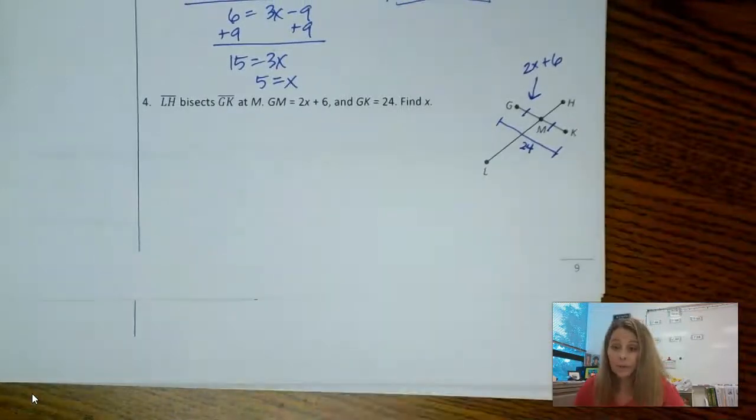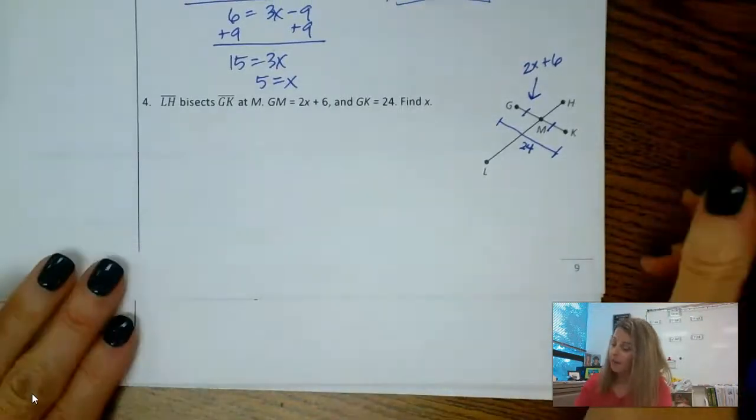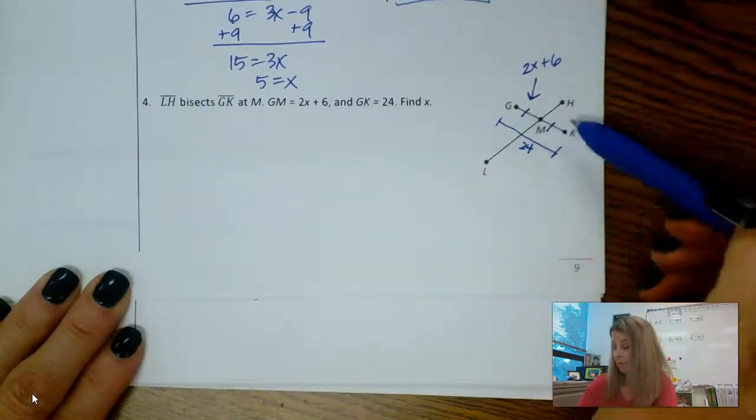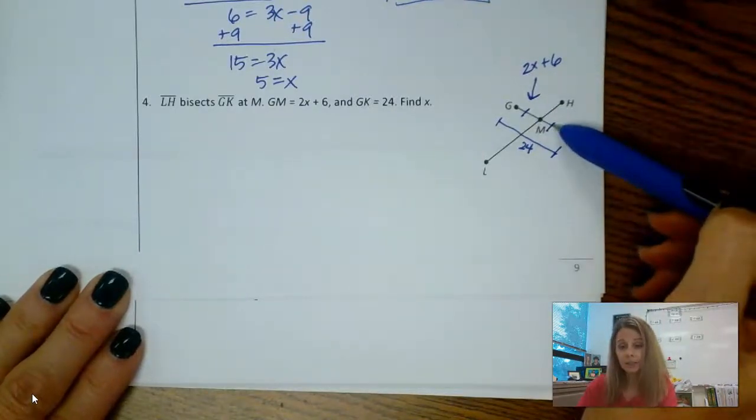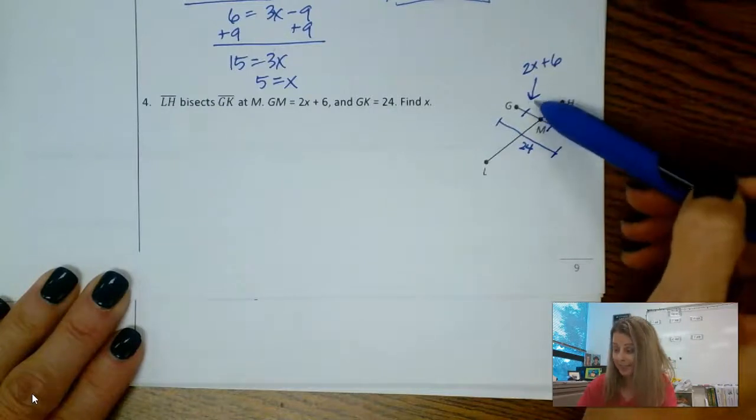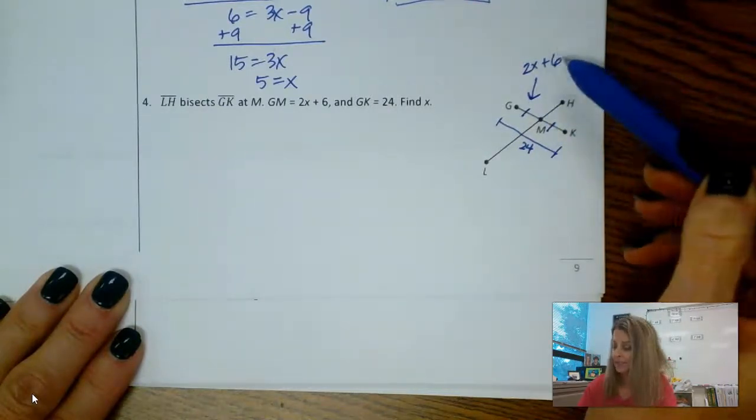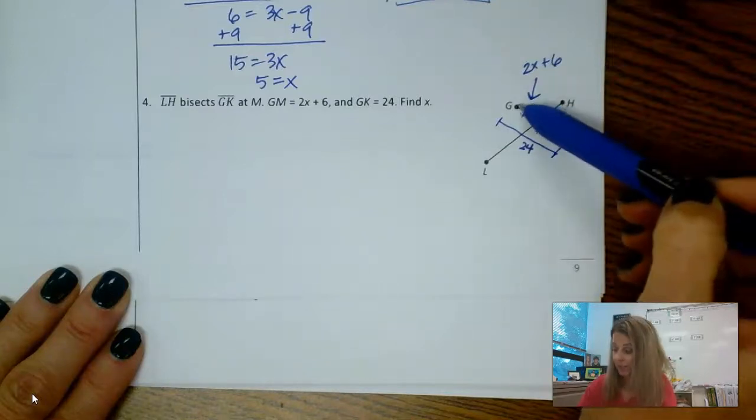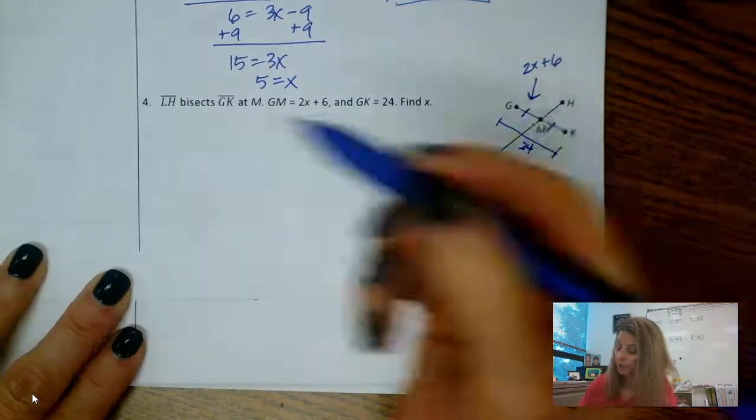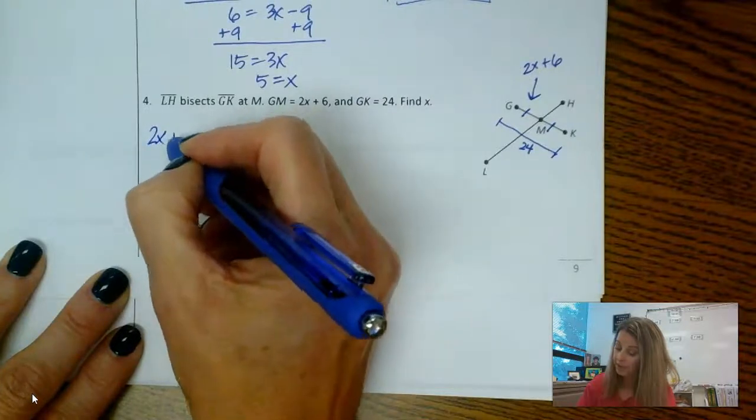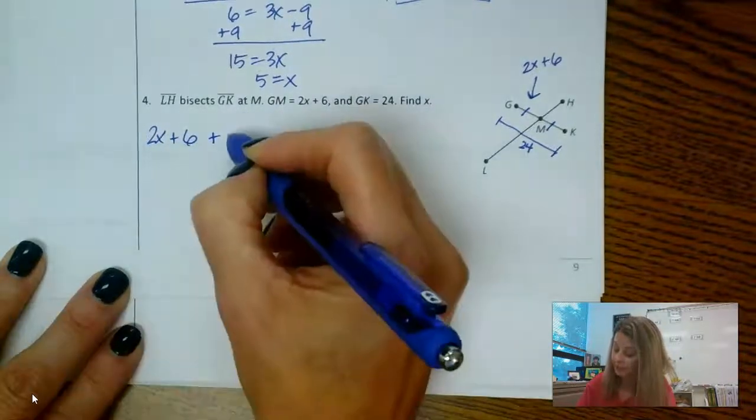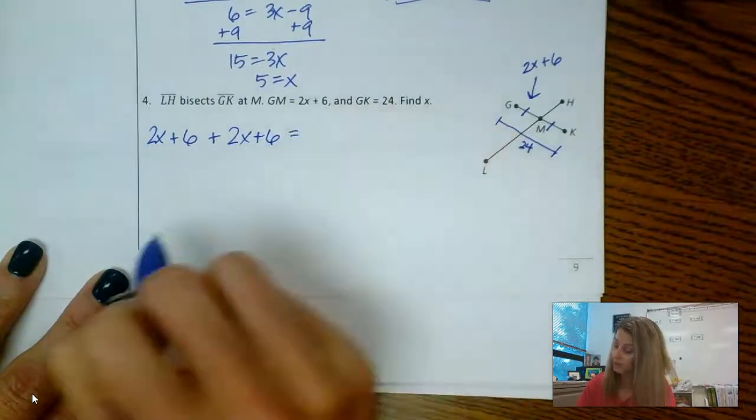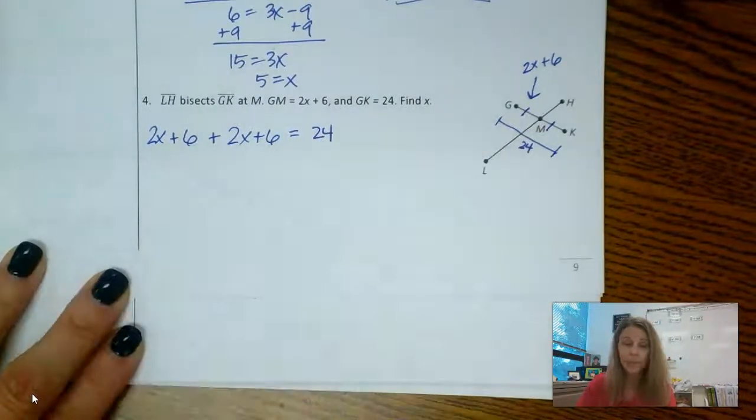There's several ways to do this. I could take 2X minus 6 here. If this side is equal, it's also 2X plus 6—I think I may have said minus, it's also 2X plus 6—and then I can use segment addition postulate to add these together and equal 24. So I could say that 2X plus 6 plus the other side, which is equivalent to 2X plus 6, equals 24. I could do that.